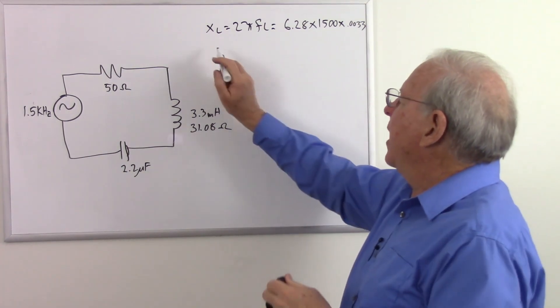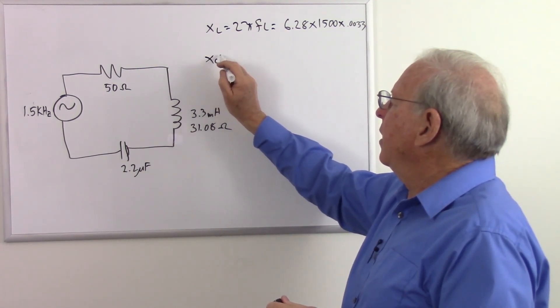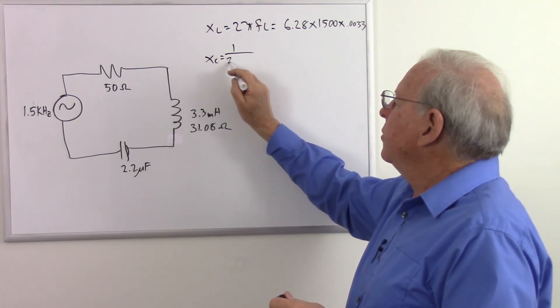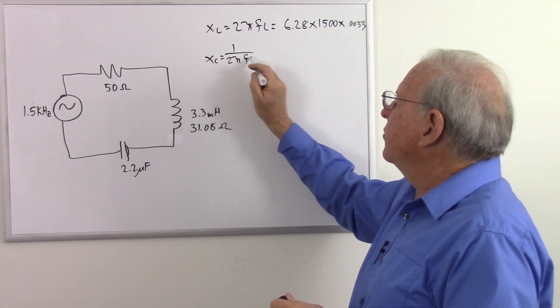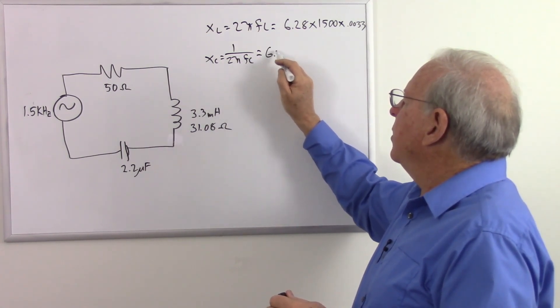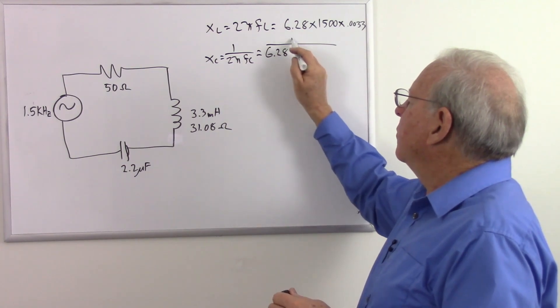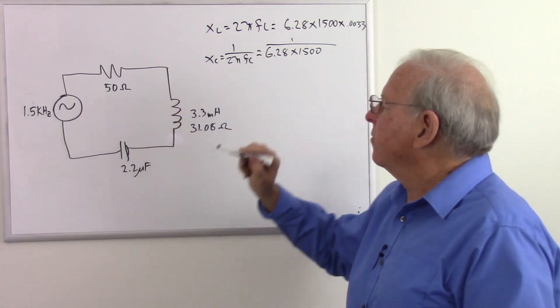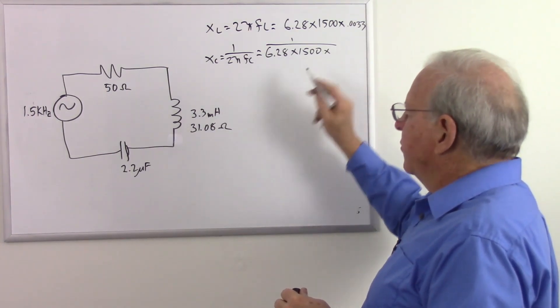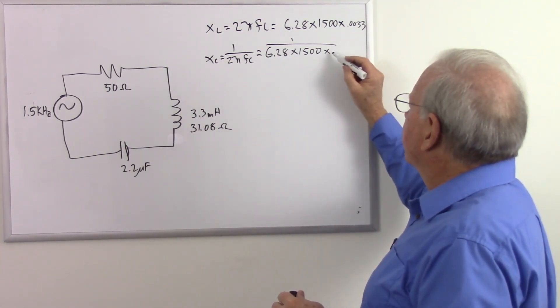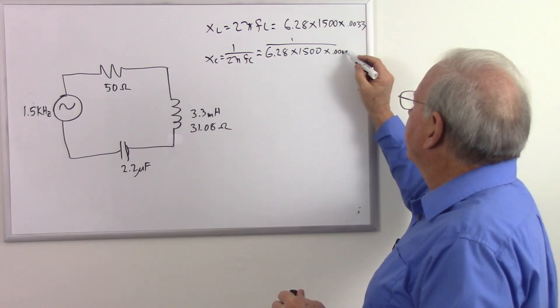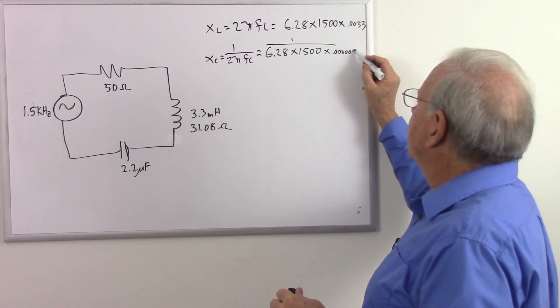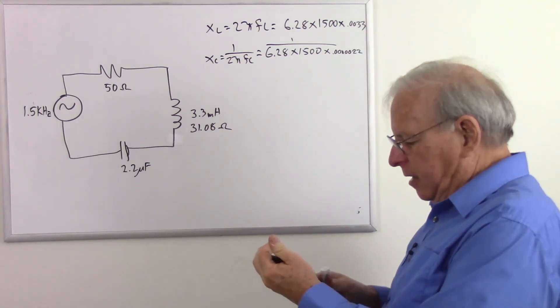Now capacitive reactance. X sub C equals 1 over 2 pi F C, which equals 6.28 times 1,500, our frequency, times 2.2 microfarads. So that's 0.000022 farads. So here we go.